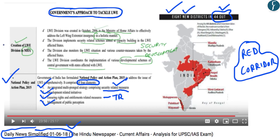The DNS also highlights that the creation of a left-wing extremism division in the Ministry of Home Affairs is another approach by the government. This division was created in 2006 to effectively address left-wing extremism insurgency in a holistic manner. It implements security-related schemes aimed at capacity building in LWE-affected states, monitors the left-wing extremism situation and countermeasures taken by affected states, and coordinates the implementation of various developmental schemes in states affected by left-wing extremism.